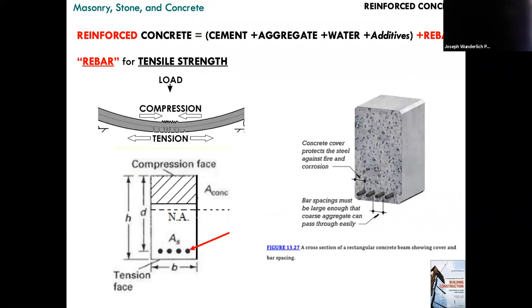In this slide you see a beam in flexure with a load from above. The top part of the beam is being compressed and the bottom part is in tension. Looking at a cross section, you can see that the concrete is doing most of the structural work in the top part in compression, and the steel is there for tensile strength in the bottom.